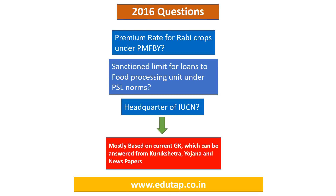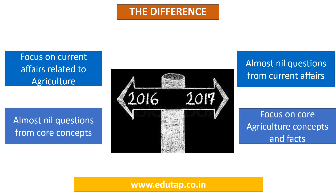This was not the case with the 2016 paper. In 2016, questions included: the premium rate for Rabi crops under Pradhan Mantri Fasal Bima Yojana; the sanction limit for loans to food processing units under PSL norms; where is the headquarter of IUCN. When we see these questions, we can say that keeping track of current affairs and reading Kurukshetra, Yojana, and newspapers religiously would have been sufficient to answer them. In 2016, the focus was specifically on current affairs related to agriculture with no questions from core agriculture concepts.